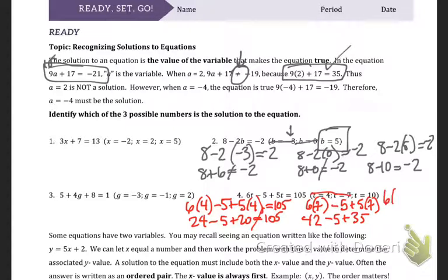6 times 10 minus 5 plus 5 times 10. So 6 times 10 is 60. Minus 5 plus 5 times 10 is 50. 60 minus 5 is 55. Plus 50. We're getting close. 55 plus 50 is 105. Therefore, t equals 10 is the correct solution here.